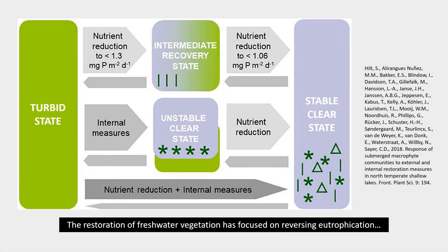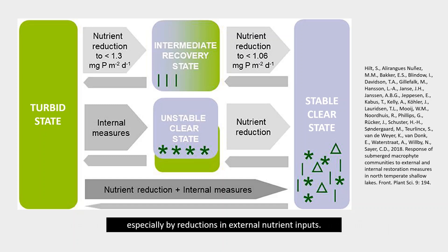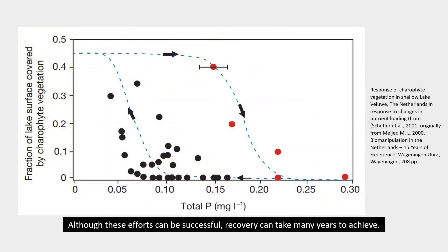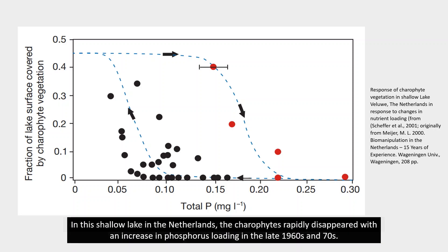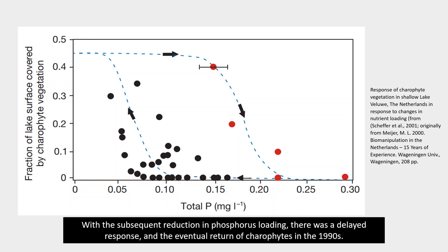The restoration of freshwater vegetation has focused on reversing eutrophication, especially by reductions in external nutrient inputs. Although these efforts can be successful, recovery can take many years to achieve. In this shallow lake in the Netherlands, the carophytes rapidly disappeared with an increase in phosphorus loading in the late 1960s and 70s. With the subsequent reduction in phosphorus loading, there was a delayed response, and the eventual return of the carophytes in the 90s.